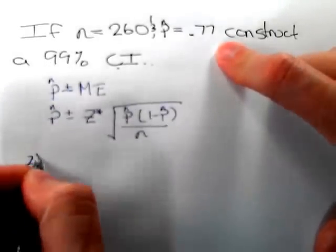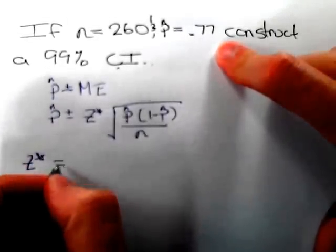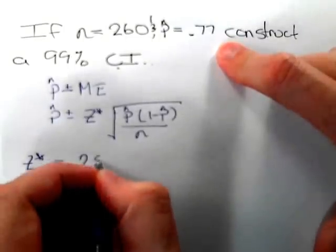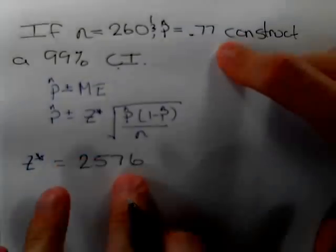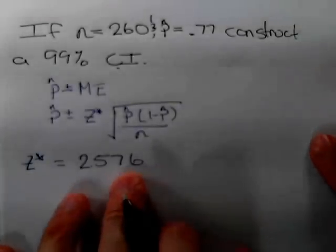z star for a 99% confidence interval is 2.576. This can be found on the t table or using the calculator.